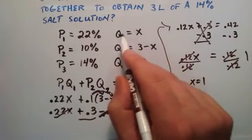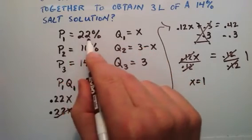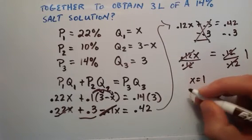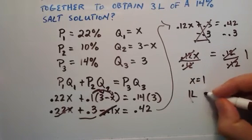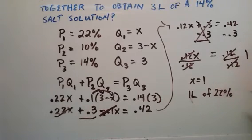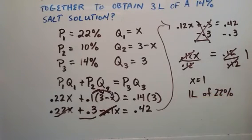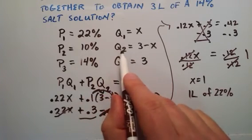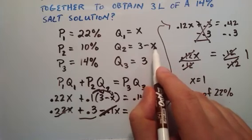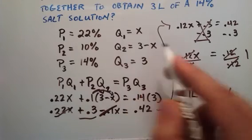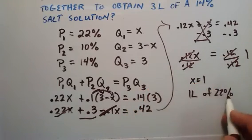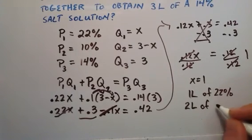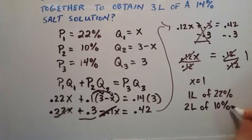x was the amount of the 22% solution that we needed, so we need 1 liter of 22% solution. Since the quantity of the 10% solution is going to be 3 liters minus the amount we used for solution 1, 3 minus 1 is 2 liters. We need 2 liters of the 10% solution.